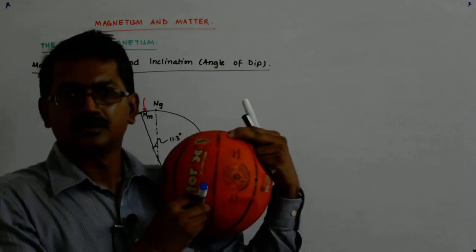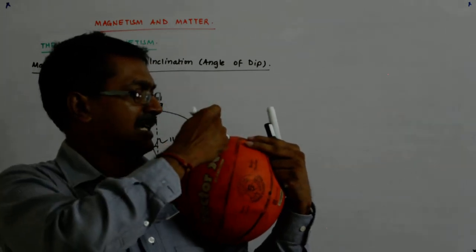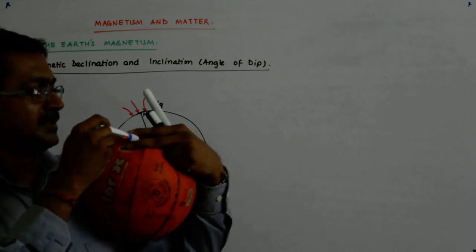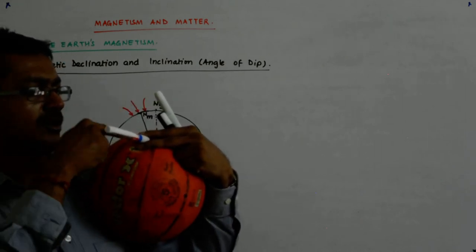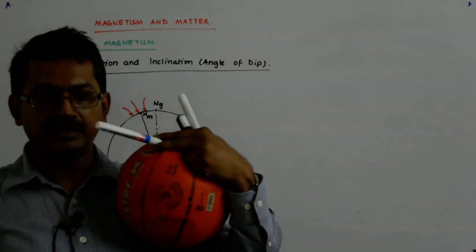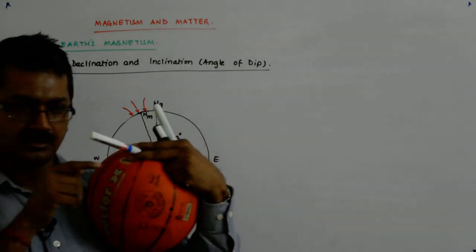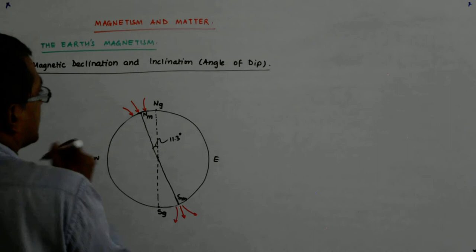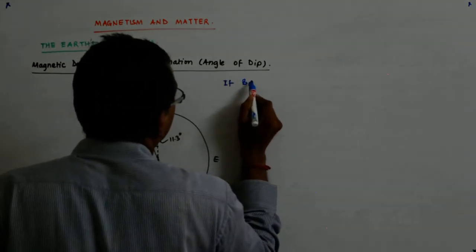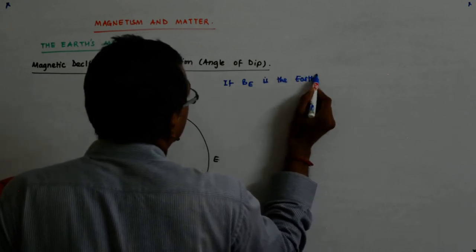It is dipping in the northern hemisphere. If it would have been here somewhere, then it would be going up. It's making an angle I. Now you understand this pen represents your magnetic field, Be - Earth's magnetic field. That's why we call it Be, Earth's magnetic field.